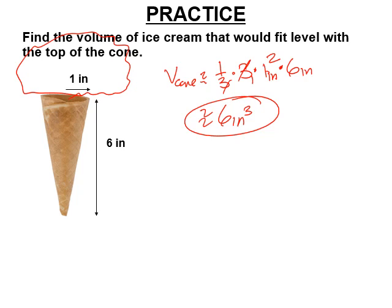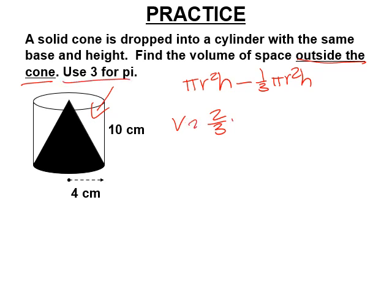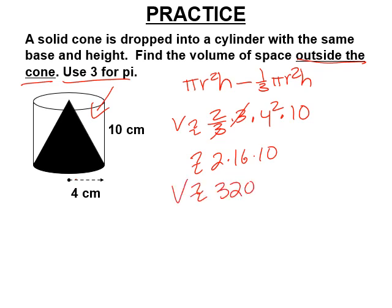We said the whole cylinder is pi r squared h; we take away one third for the cone, leaving two thirds. To find the volume of the space outside the cone inside the cylinder, using 3 for pi: two thirds times 3 times 4 squared times 10. The 3s cancel, giving 2 times 16 times 10. Two times 16 is 32, so approximately 320 cubic centimeters in the space outside the cone.